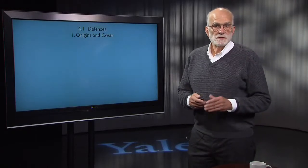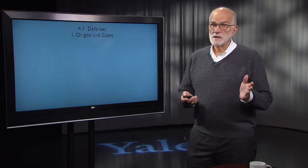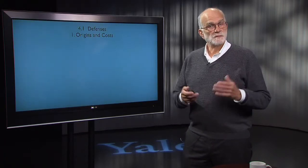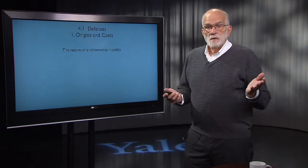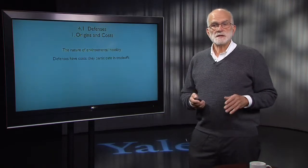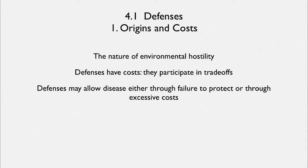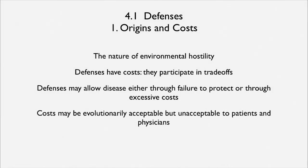We're now going to begin a series of talks about how the host defends itself against the hostile environment. This is actually a broader issue than just having an immune system that defends against parasites and pathogens. We're going to talk about the nature of environmental hostility, its patterns in space and time. A central theme is going to be that all defenses have costs, so every time a defense is mounted, it actually opens a vulnerability as well. Defenses may allow disease either through failure to protect or through excessive costs, and the costs might be evolutionarily acceptable but completely unacceptable to patients and doctors. That is the overarching framework.